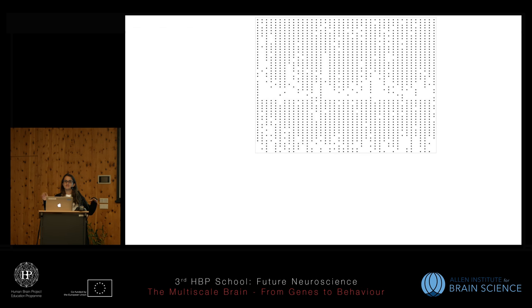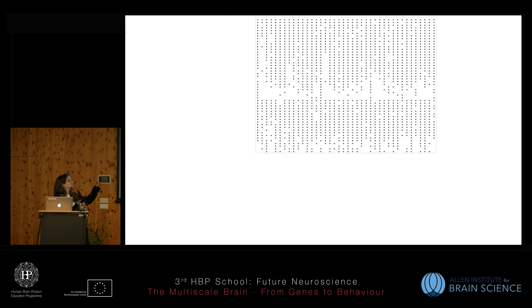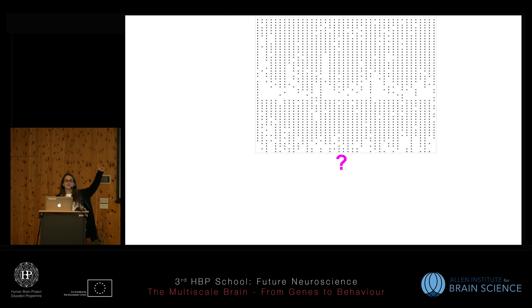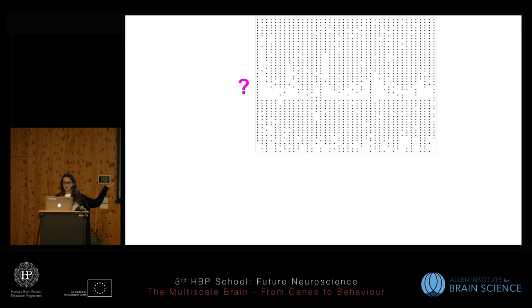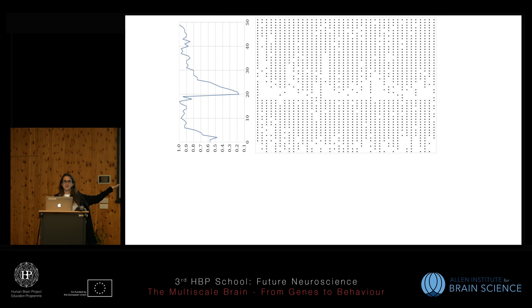This may leave you with something like a raster plot. You can call it a raster if you did it from a neuron, or this can be just did the monkey perform correct or incorrect. And then you can ask what's happening over time — most likely you're going to collapse over trials and have something like that. You can also ask what's going on over trials, and then you will collapse in the other direction and have something like that.